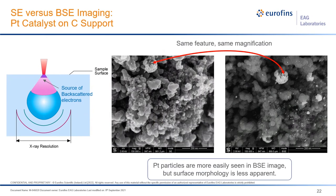Here are two images of a platinum catalyst on a carbon backbone support. The secondary electron image on the left shows topographic contrast — the roughness of the carbon-based support. Switching to the backscatter image on the right, the contrast mechanism becomes average Z number: carbon is low-Z and shows dark relative to the platinum, which is high-Z. Depending on whether you're interested in the surface area of the carbon skeleton or the distribution and size of platinum particles on the catalyst structure, you choose the imaging mode that gives you that advantage.